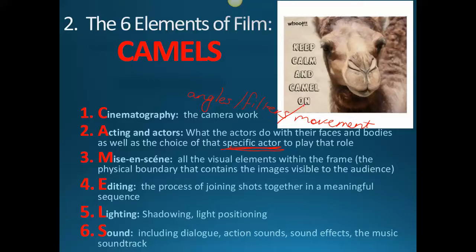E stands for editing — things like joining the actual pieces of film together. L stands for lighting — the amount of light, shadowing, light positioning. And lastly S for sound, which includes dialogue, action sounds, sound effects, and music soundtrack — your diegetic and non-diegetic sound.